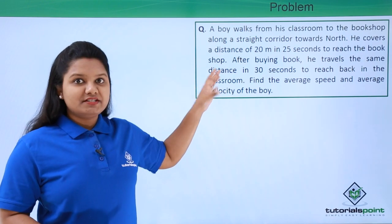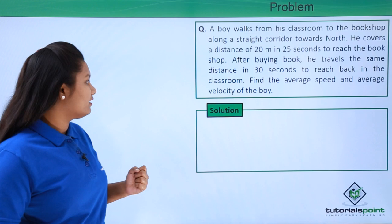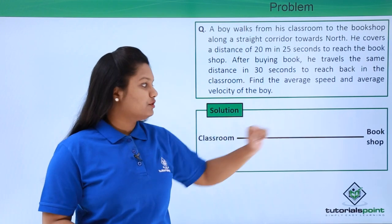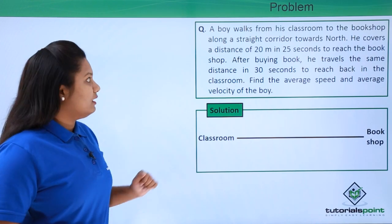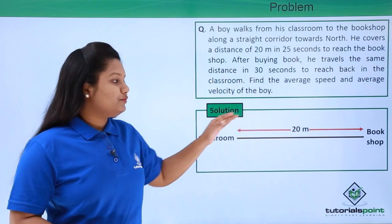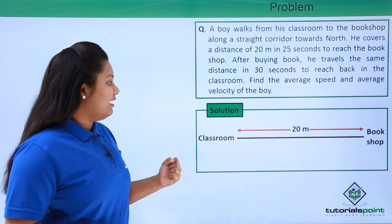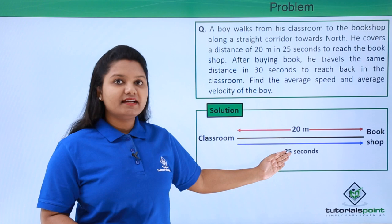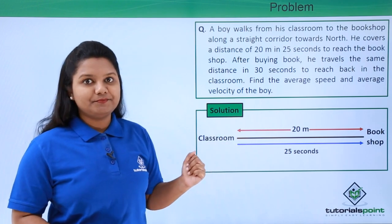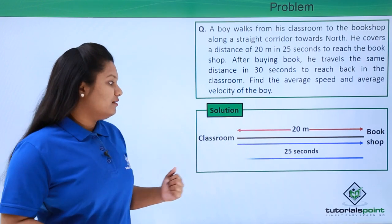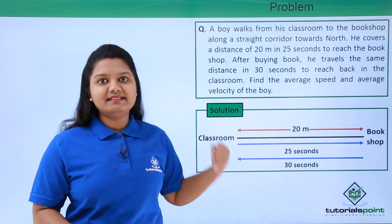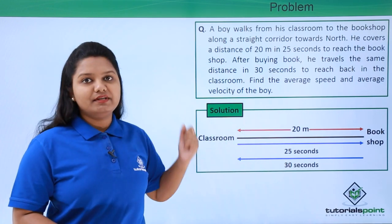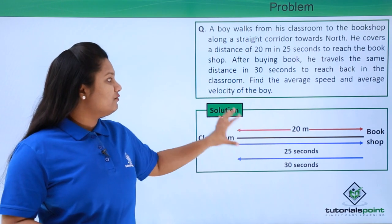Let's understand the question first. Let's say this is the classroom and this is the path which the boy takes to the bookshop. The path length is given to be 20 meters. The boy walks to the bookshop and takes 25 seconds to cover this 20 meters. While returning back, he takes 30 seconds to cover the same distance of 20 meters back to his classroom.